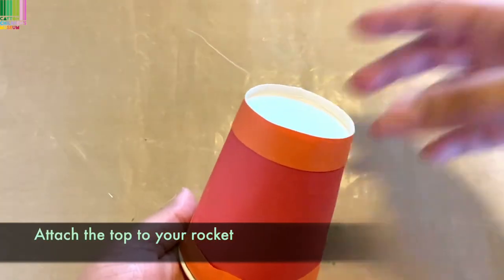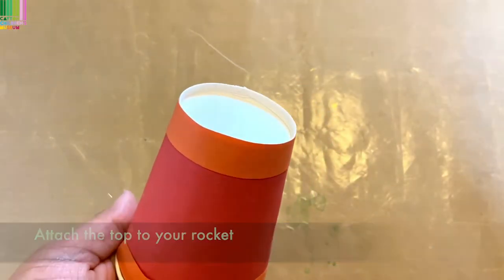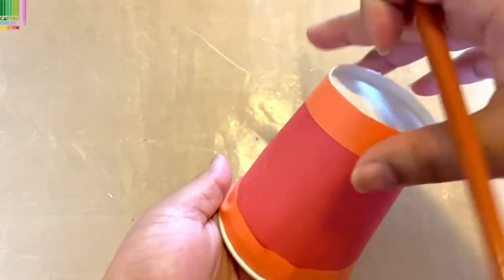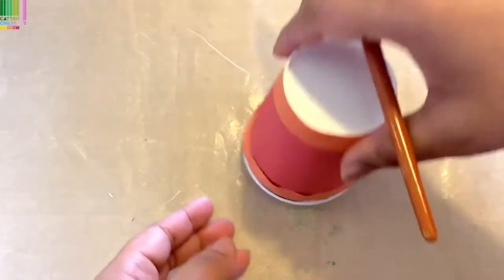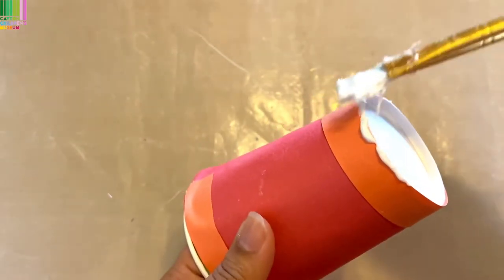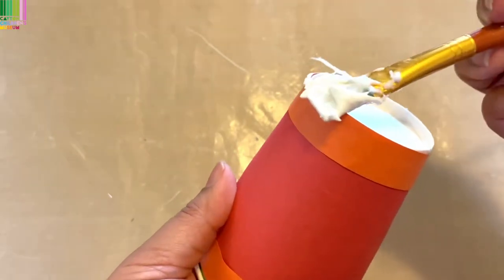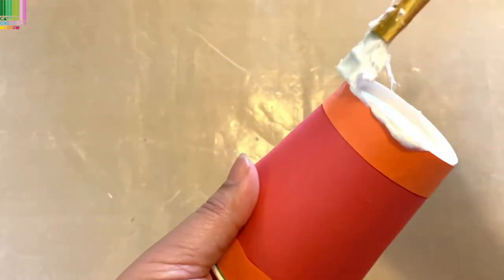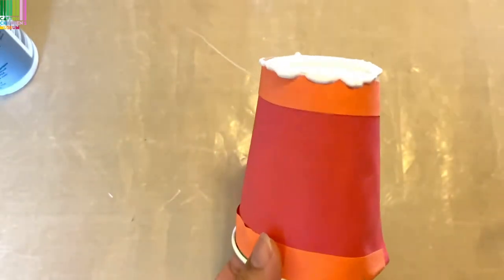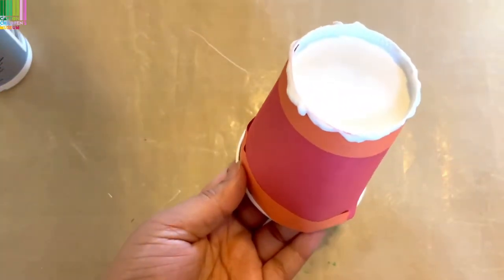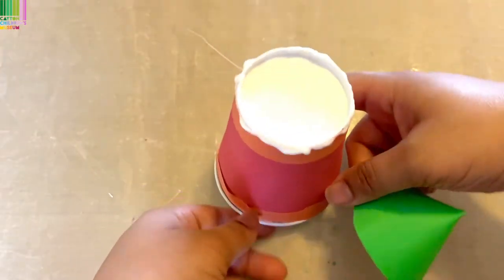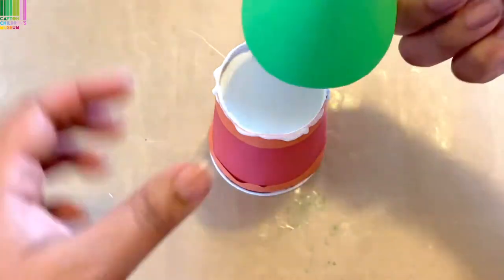All right, so now we are going to add the tops on. What we're going to do is add some glue to the rim. You want enough glue for it to catch. All right, so your glue should look something like this. And then all you do is take your top and sit it right on top.